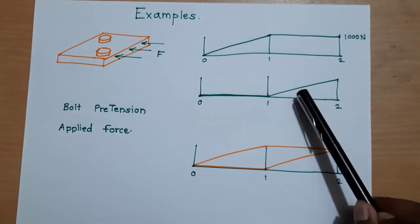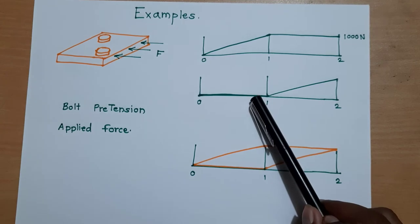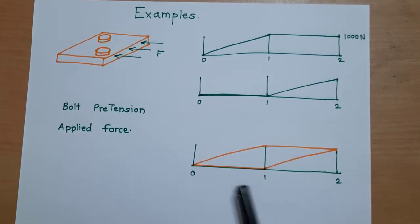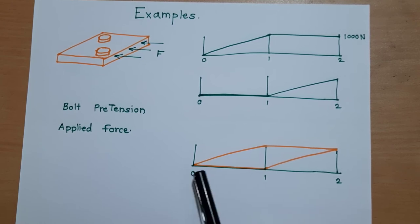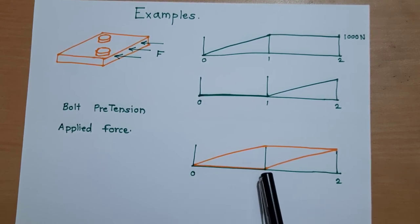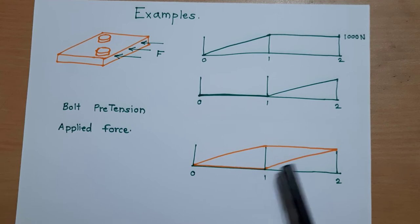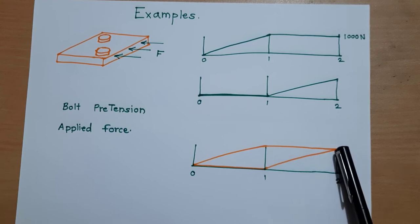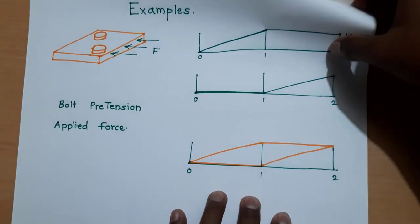Combining these two analyses — they are defined independently in the analysis. The combined graph shows bolt pretension increasing in the first step while force is 0, and in the next step bolt pretension remains locked while force increases from 0 to the maximum value. These are the two-step analysis. We will see one more example for more information.